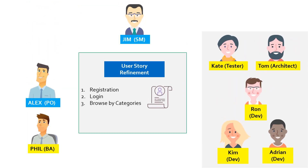Let's start off with the first event: Sprint Planning. Before we deep dive, I want to take you back to the previous episode where story refinement was done as part of Sprint Zero, and user stories related to registration, login, and user browse by categories were refined. Alex and Phil did a story walkthrough, the team asked questions, clarifications were provided, and further details were added to the user stories.